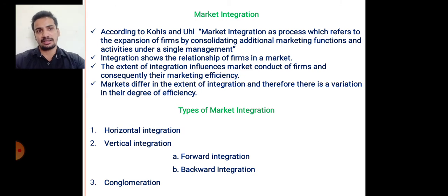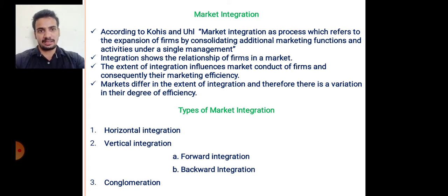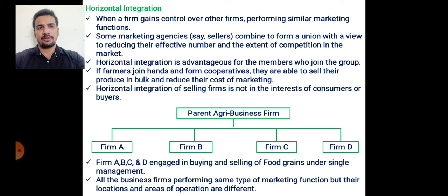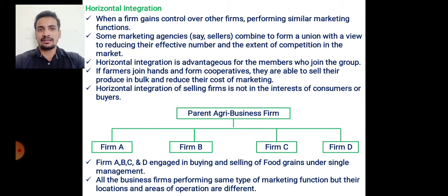There are different types of market integration. The first is horizontal integration, the second is vertical integration — which has two subtypes: forward integration and backward integration — and the last type is conglomeration. Horizontal integration occurs when a firm gains control over other firms which are performing a similar marketing function. Some marketing agencies or sellers combine to form a union with a view to reduce the effective number and extent of competition in the market. This is an example of horizontal integration.